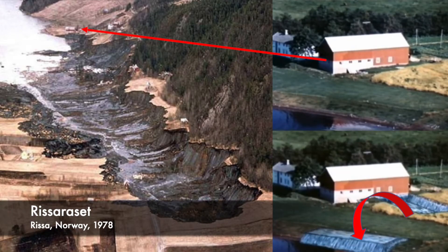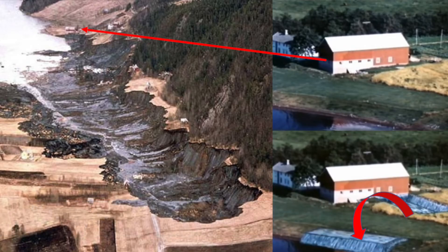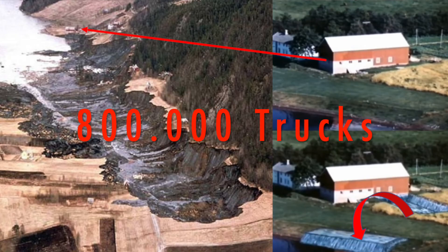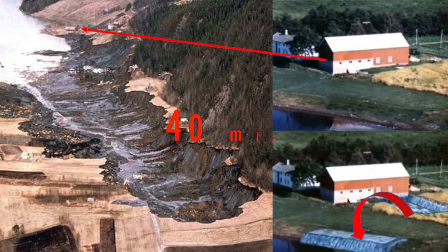But first an example. This is the Risa quick clay slide from 1978. The total volume of soil lost into the sea is 6 million cubic meters. That is equal to 800,000 fully loaded trucks removing soil. All this soil was removed within 40 minutes during this slide.